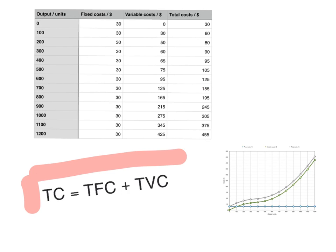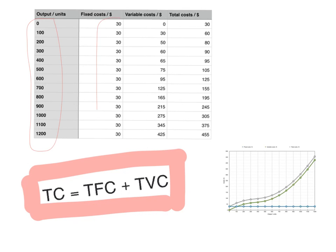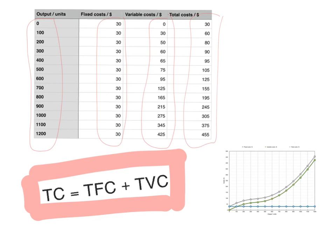Total cost equals total fixed cost plus total variable cost. Here is a numerical example: assume a firm can produce output from zero up to twelve hundred units. Its fixed cost is thirty dollars per month — this could be rent of the building or interest on a loan from the bank. The variable cost increases as output increases. To find total cost, you simply add both together: thirty plus zero gives thirty, thirty plus thirty gives sixty, thirty plus fifty gives eighty, and so on. You need to be able to calculate total costs, fixed costs, and variable costs from a set of data.